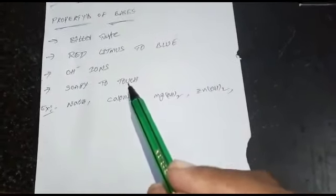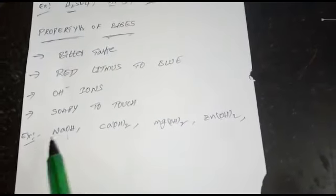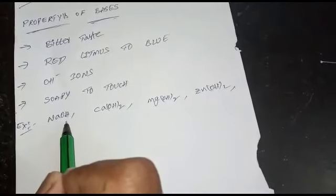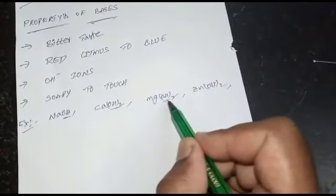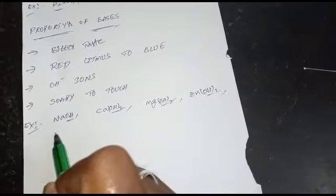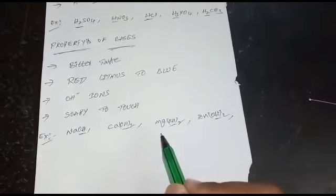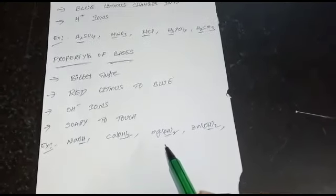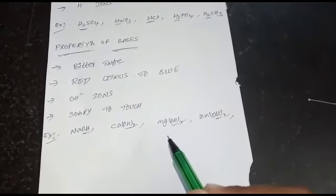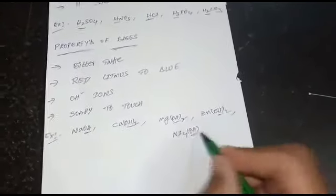Examples of bases: sodium hydroxide (OH⁻ ion), calcium hydroxide (OH⁻), magnesium hydroxide (OH⁻), zinc hydroxide (OH⁻). Almost all bases contain OH⁻ ions. Natural base examples include soaps, detergents, window glass cleaners, and ammonium hydroxide (NH₄OH).